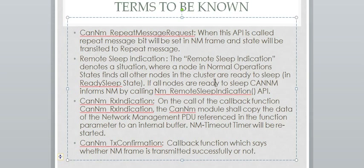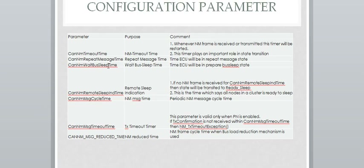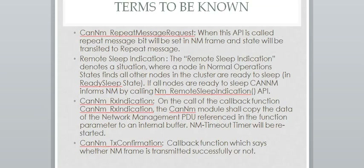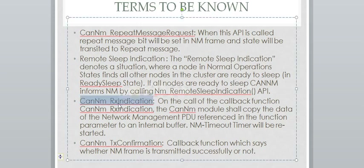If all other nodes are ready to sleep, CAN-NM will inform the NM module by calling NM_RemoteSleepIndication API after the Remote Sleep Timer elapses — the Remote Sleep Indication Time is the time required for CAN-NM to inform the NM module that all other nodes in the cluster have entered Ready Sleep State. CAN-NM-RX Indication is a callback function; when called, the CAN-NM module shall copy the data of the received NM PDU into an internal buffer, and the NM Timeout Timer will be restarted. CAN-NM TX Confirmation is also a callback function that indicates whether the NM frame was transmitted successfully.